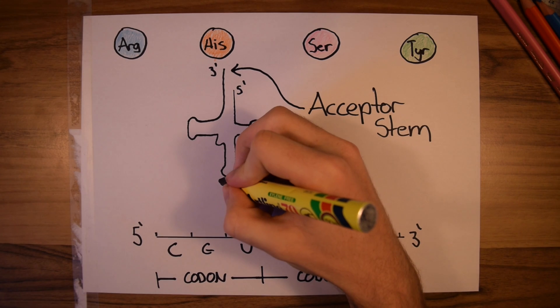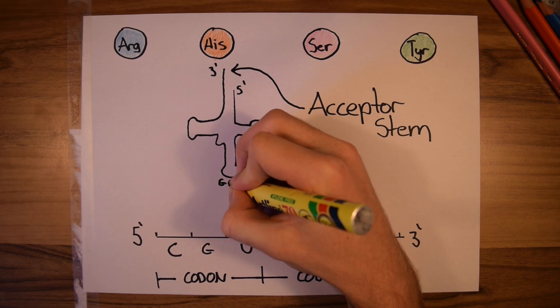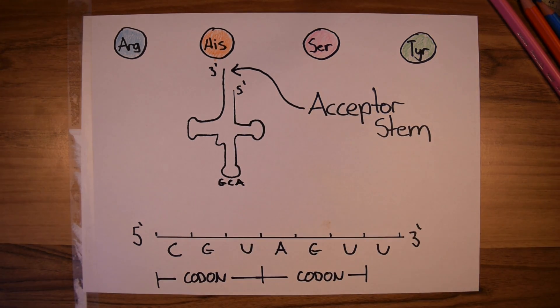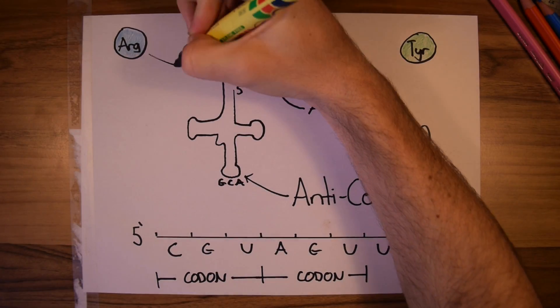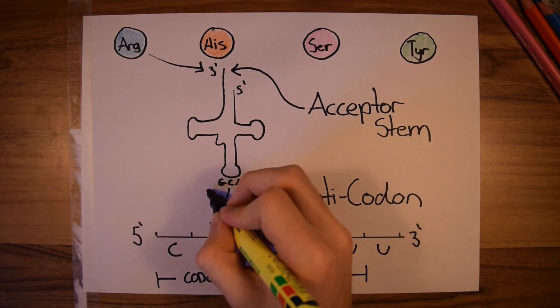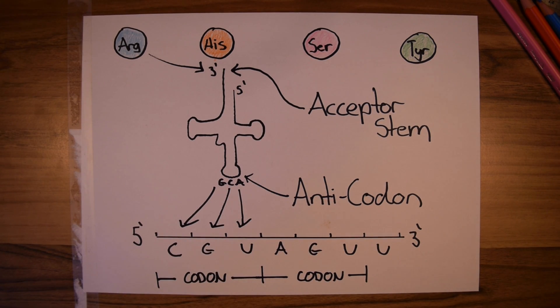The second point of specificity is the codon specificity. The unique anticodon of the tRNA ensures that the correct three nucleotide sequence is paired. These two specificities combined allow for the correct amino acid to be matched with the correct codon.